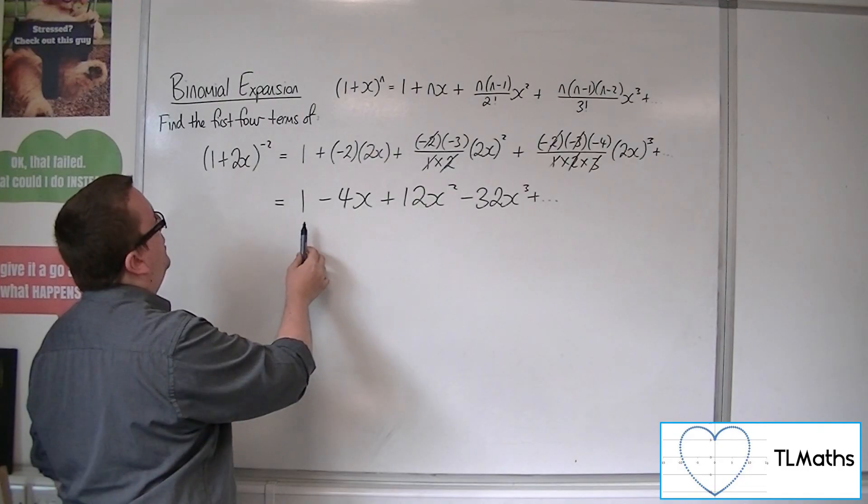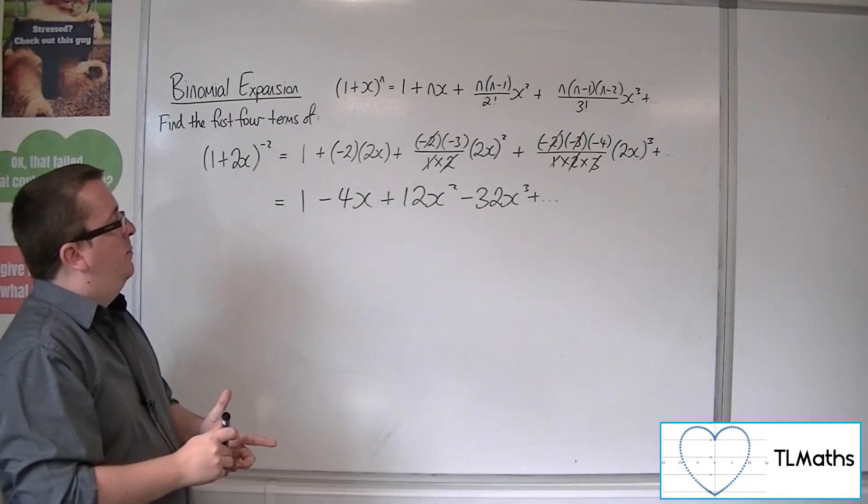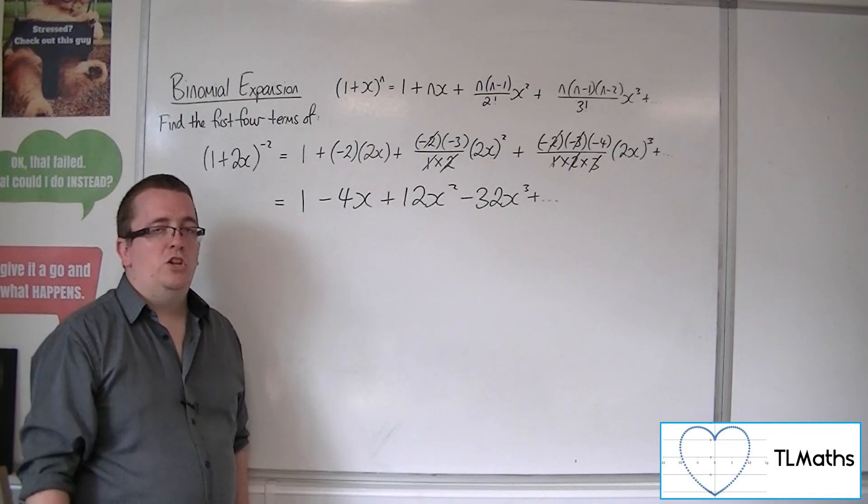So here are the first 4 terms of the expansion. 1, 2, 3, 4. 1 minus 4x, plus 12x squared, minus 32x cubed.